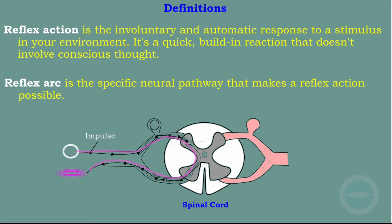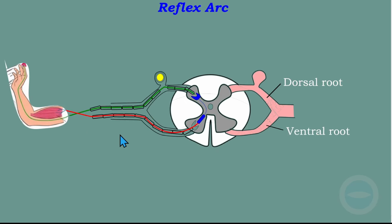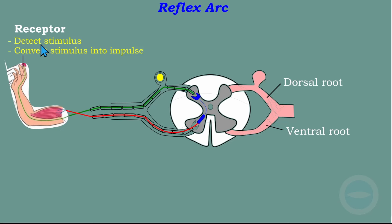Now let's go to the reflex arc and label all the parts. This is the spinal cord. First, I will start with the receptors. Receptors could be eyes, skin, ears, or anything like taste. The function of receptors is to detect stimuli and then convert those stimuli into an impulse, because when we are working with neurons, we need an impulse.